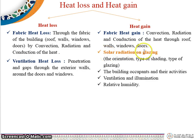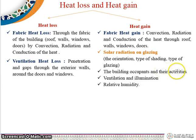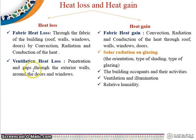Heat gain can also come from solar radiation, glazing — meaning the glass of the house and windows — the orientation, type of shading, type of glazing, building occupants and their activities, ventilation and illumination, and relative humidity. These are all factors for heat gain. Ventilation heat loss also occurs through penetrations and gaps through exterior walls, around doors and windows.